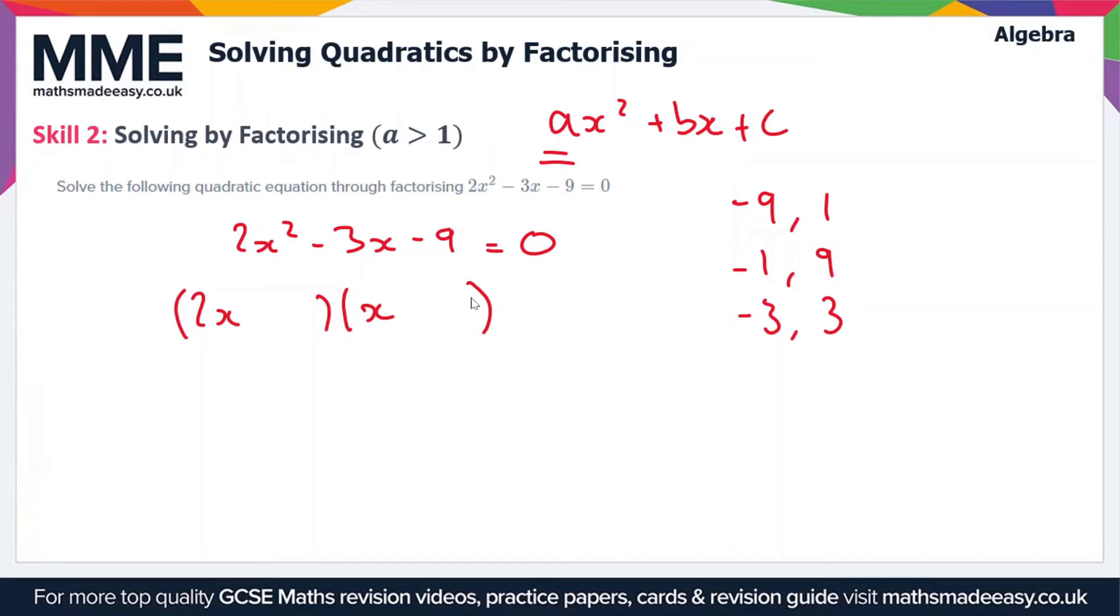So if you play around with this, you should get that the numbers inside the brackets are 2x plus 3 and x minus 3.